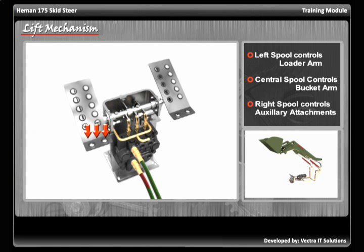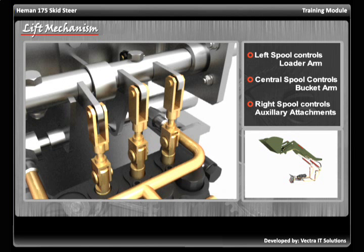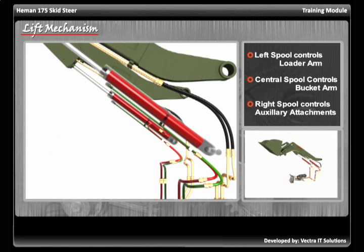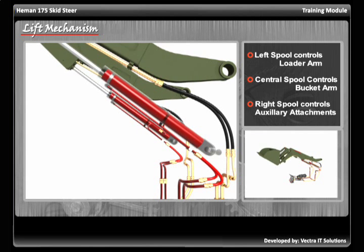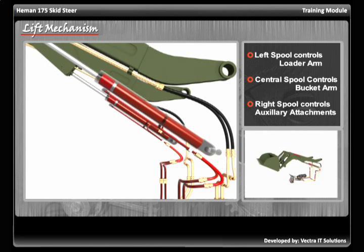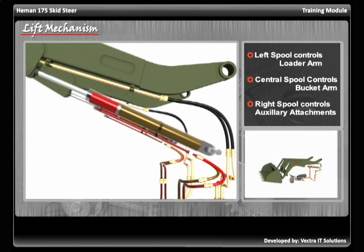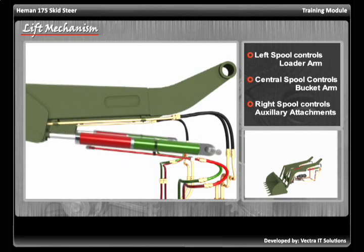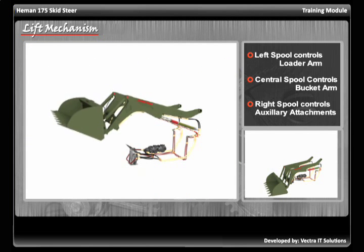Pushing the foot pedal by the ankle of the operator reverses the entire mechanism. The spool gets pulled up, and the lower port becomes the escape route for the pressurized oil. The pistons of the cylinders are pulled in the opposite direction, which collapses back the extension rods of the cylinders and brings down the loader arm proportionately.